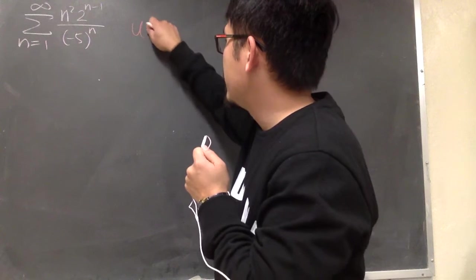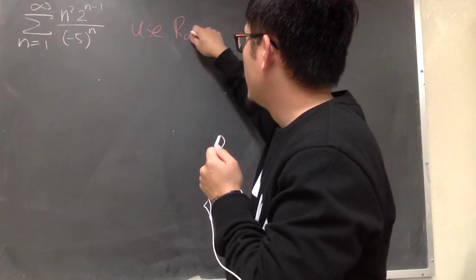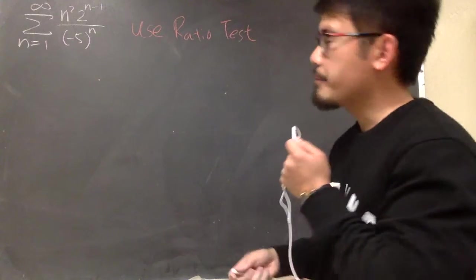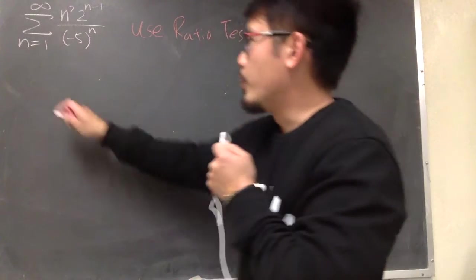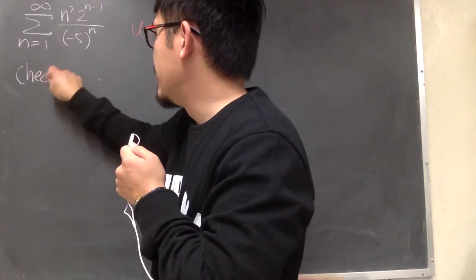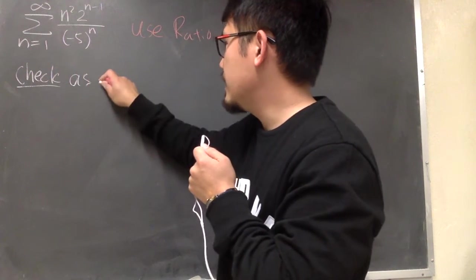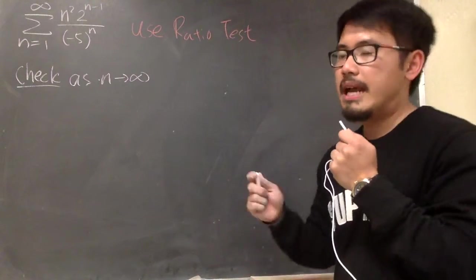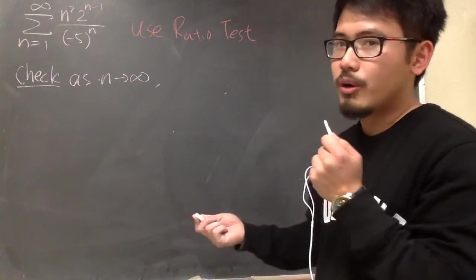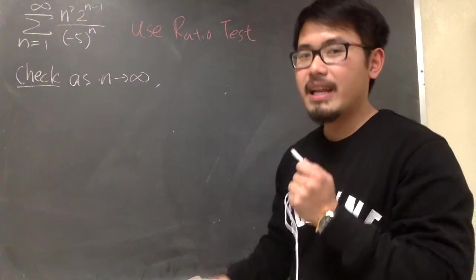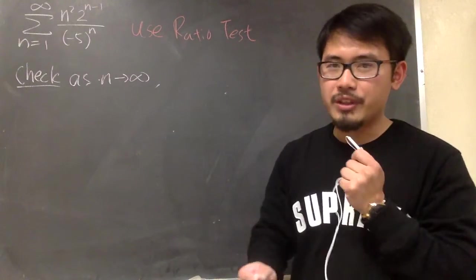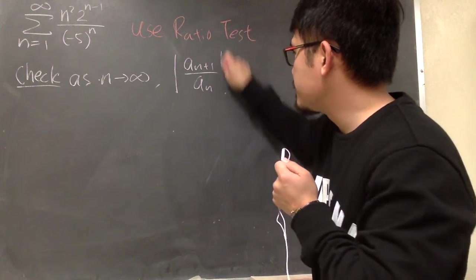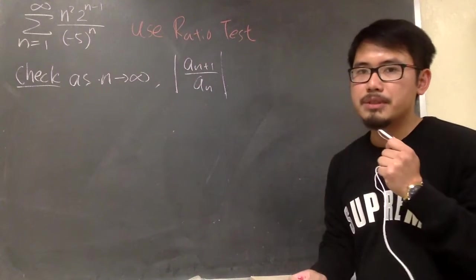Let me just indicate that we are going to use the ratio test. And this is how it goes. We will first check the limit as n goes to infinity, and we are going to compare the ratio of the next term and the current term. Namely, we have to look at a n plus 1 over a n. And we do have to have the absolute value.